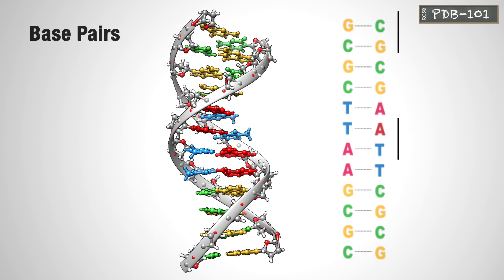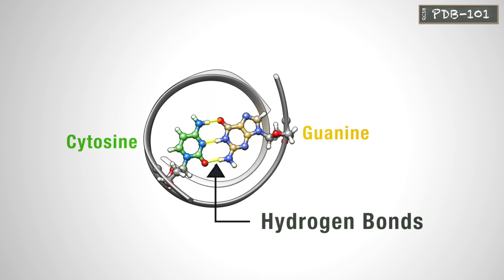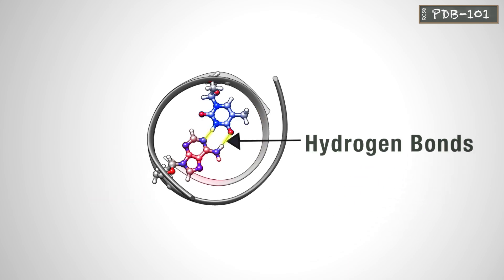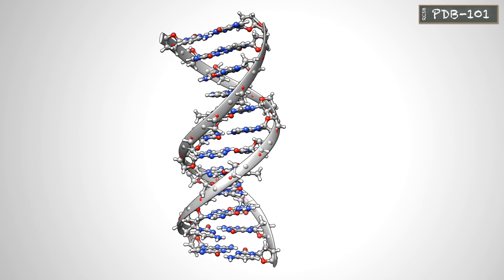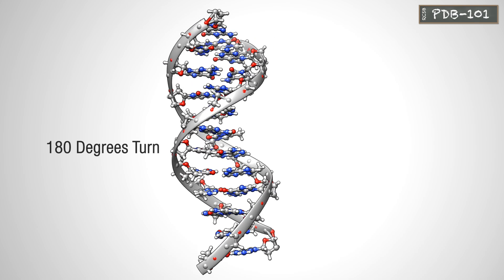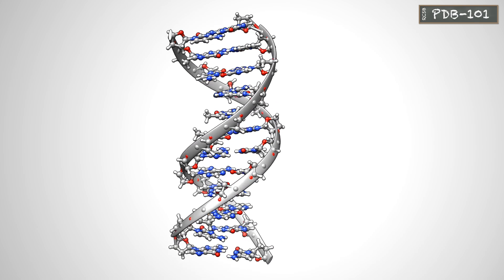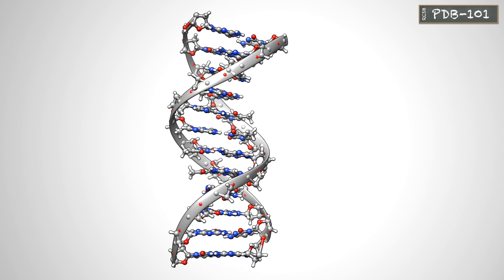In these pairings, A pairs with T and G pairs with C via sets of complementary hydrogen bonds. The edges of the base pairs are exposed in the two grooves of the double helix, the wider major groove and the narrower minor groove. These edges are also used to carry information that is read by proteins that interact with the double helix.